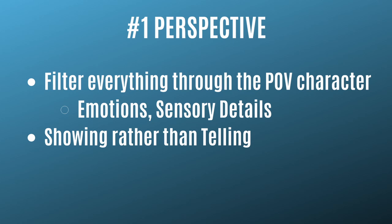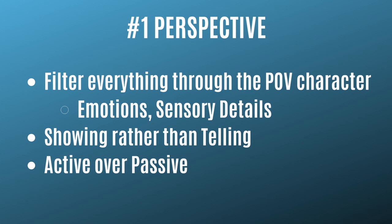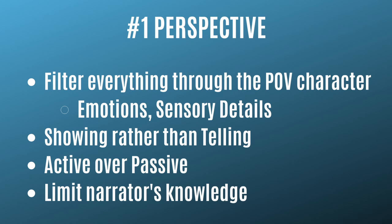Because we have this intimate, in-the-moment point of view, we can't be telling the audience what's happening. We need to have the character experiencing it right now in real time so that the audience experiences it in real time. Events will be active, in the moment, with a sense of immediacy. And one last thing: you need to limit your narrator's knowledge — this is an effective way of creating suspense in your stories.